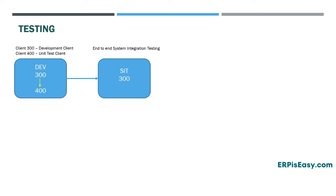Once the unit testing is successful, the changes are moved to the SIT system where system integration testing is done. This system will be connected to other SAP and non-SAP applications as well, so it will allow the developers to test end-to-end scenarios.